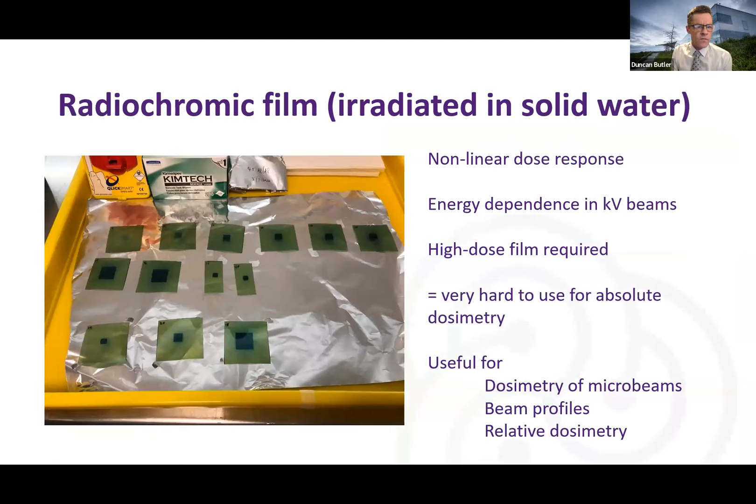Radiochromic film. Personally I've failed to use that for dosimetry. I know other people have had some success, but generally it's quite non-linear, has an energy dependence. You can't use the normal EBT3. You have to use a high-dose film and that's less uniform. So I've found it very hard to use for absolute dosimetry. But it's really good for getting profiles of microbeams, beam profiles, and relative dosimetry.